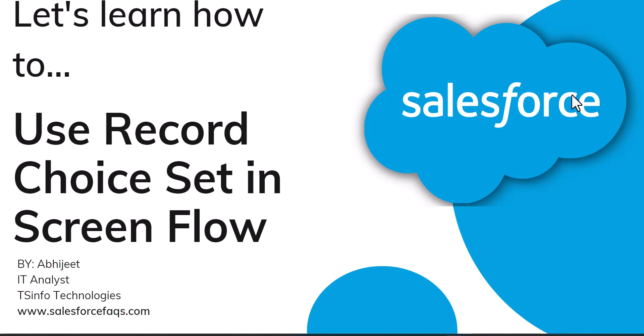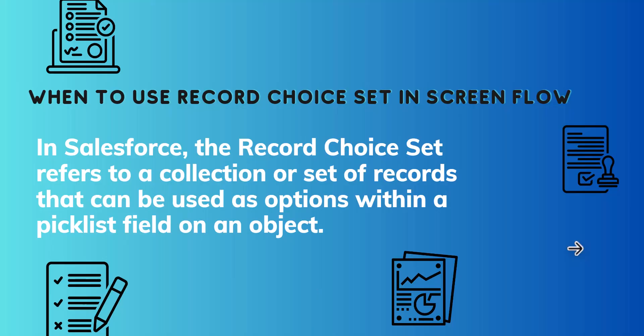Hello everyone and welcome to the channel. Today in this video I will explain how we can use a record choice set in a Salesforce screen flow. In Salesforce, the record choice set is nothing but a collection or set of records that can be used as options within a checklist field or an object. In this example, we will create a screen flow to create an opportunity record, and in that screen flow we will create a record choice set for the opportunity accounts field.